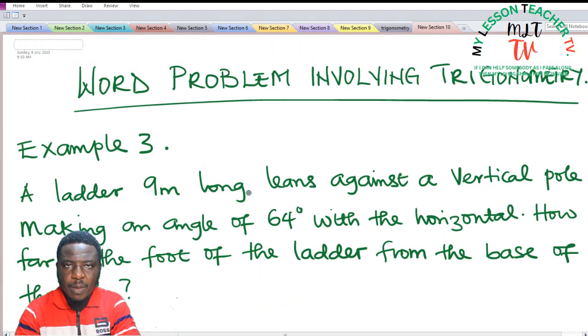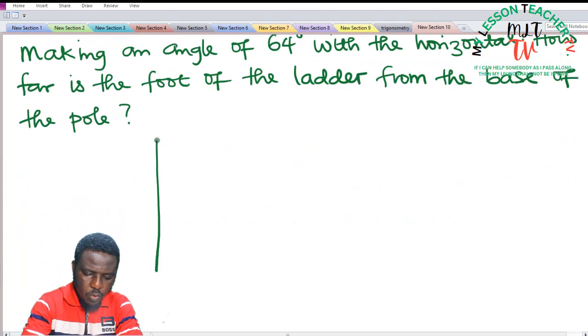This word problem can also be represented using a right angle triangle. Let's call this the wall. Then this is the ladder leaning on the wall.